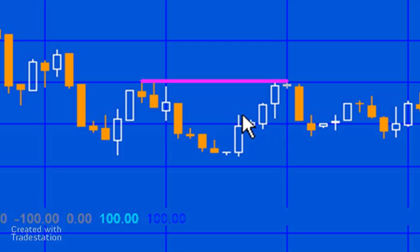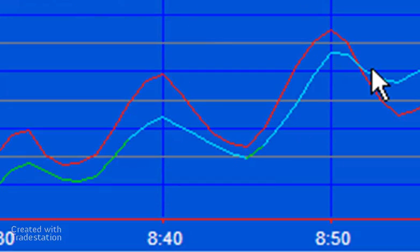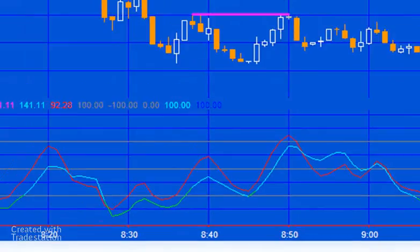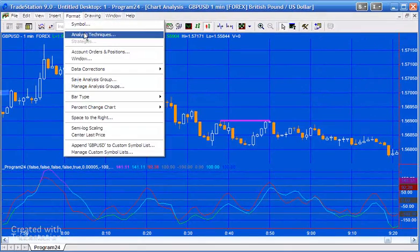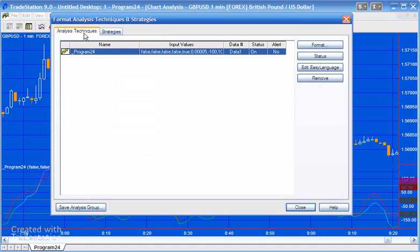So here we can see an example where the CCI has made a higher high and the price has either made two pivots that are either equal or the second one is lower than the first one. But what you'll notice here is we're actually ignoring one of the price pivots which occurs in this middle bar here. So that is what I'm calling secondary divergence. We're looking for essentially the first and third pivots in price and two pivots in CCI.